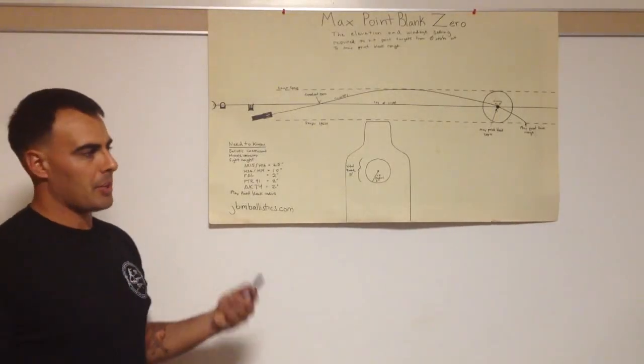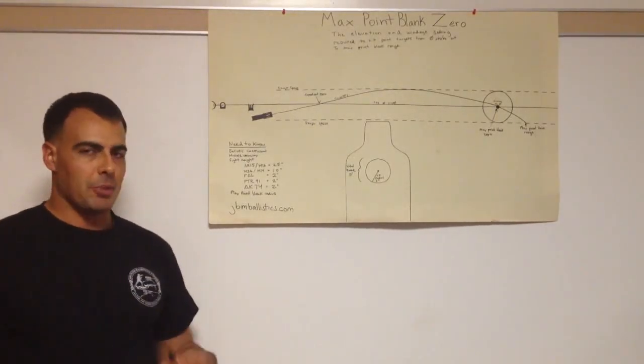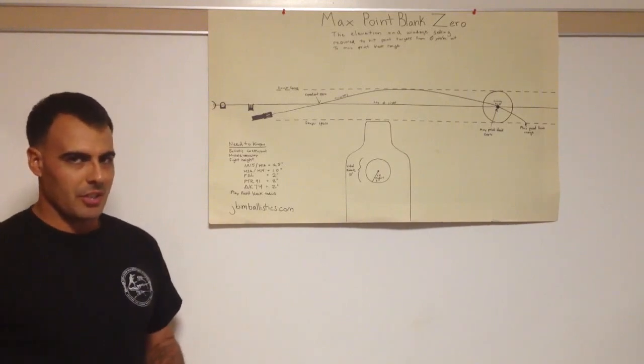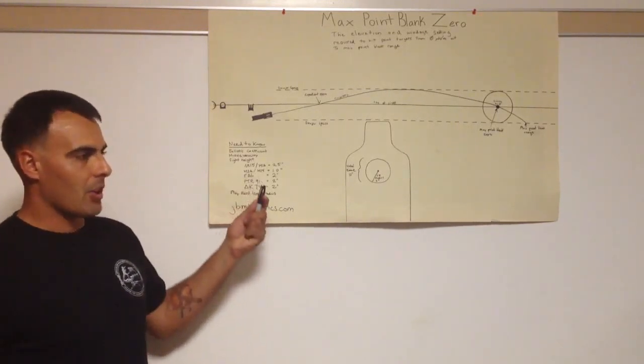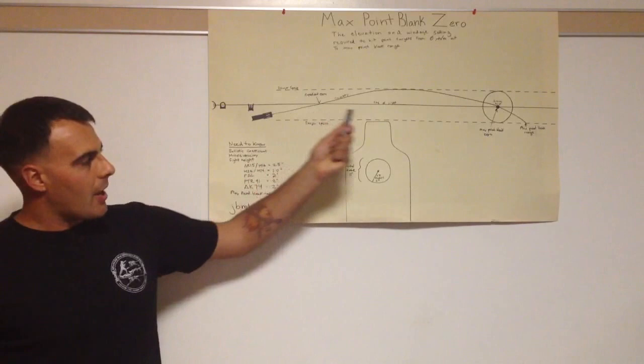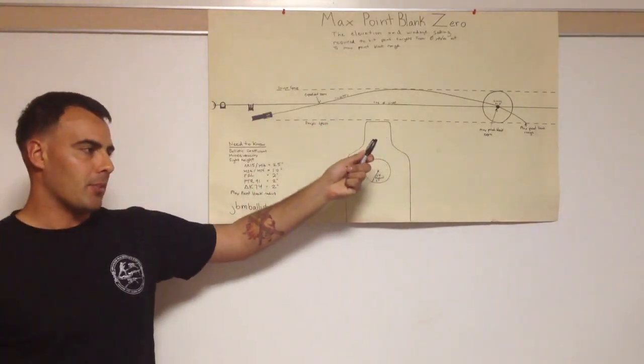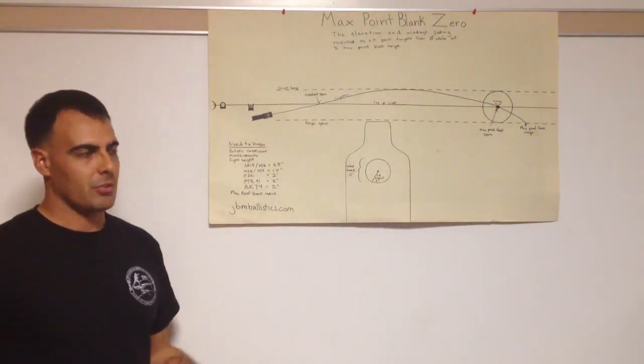Hey guys, Mike here, and we're going to be talking about Max Point Blank Zeros. Max Point Blank Zero is the elevation and windage settings required to engage a point target from zero out to your Max Point Blank range under ideal weather conditions, meaning no wind.